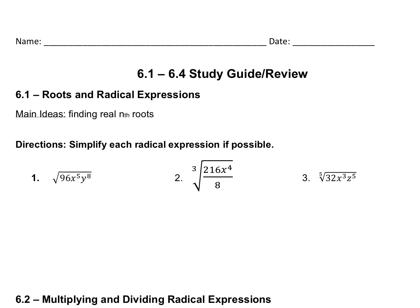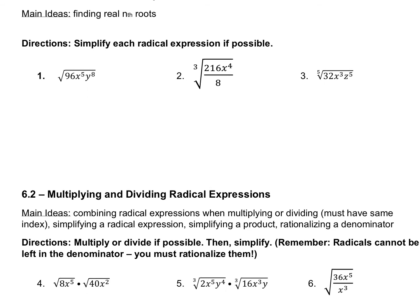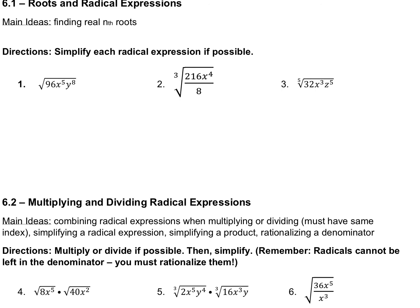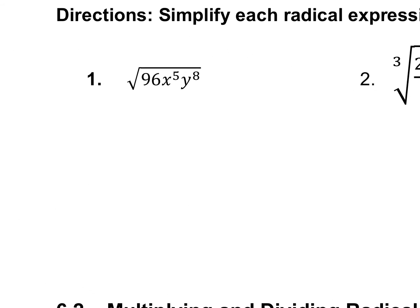So the review covers sections 6-1 to 6-4, working through each section at a time. The first section, 6-1, was roots and radical expressions — basically finding the real roots of something. It says simplify each radical expression if possible. Number one: break it down into the perfect and not-so-perfect parts. Figure out what perfect square 96 is divisible by — start with 100, 81, 64, 49... 96 divided by 16 is 6. So 16 and 6 is what you would do there.